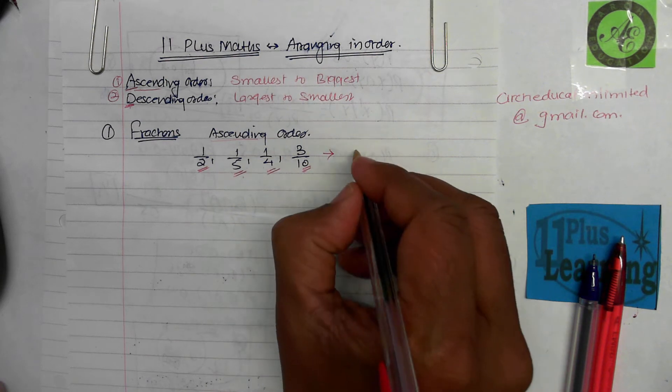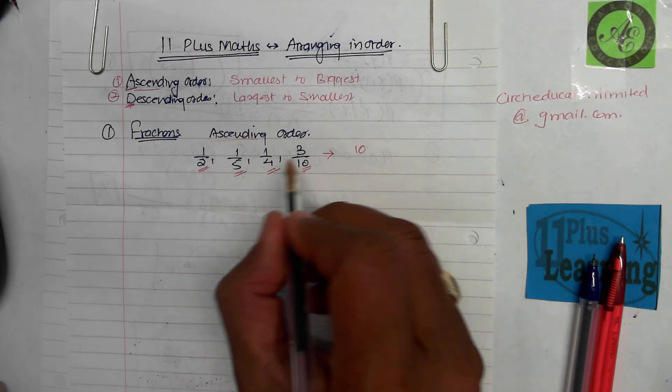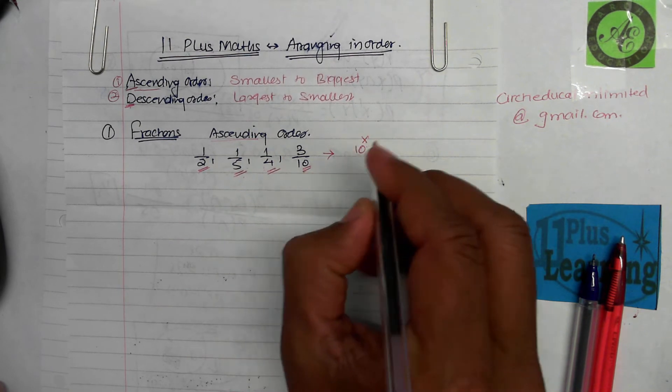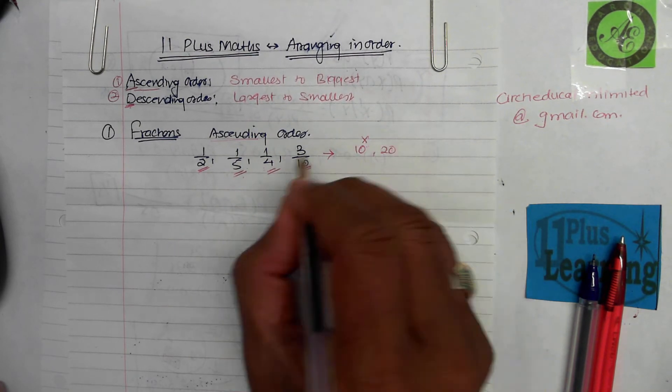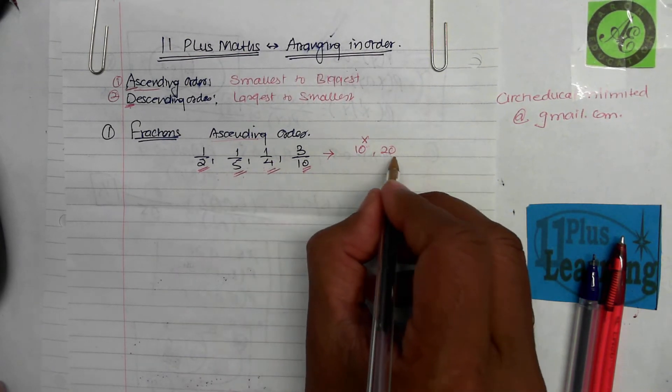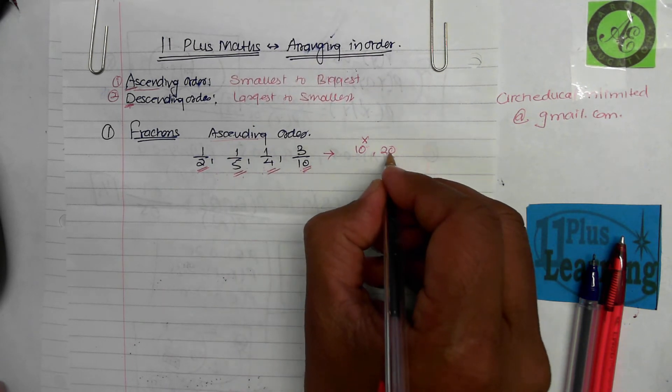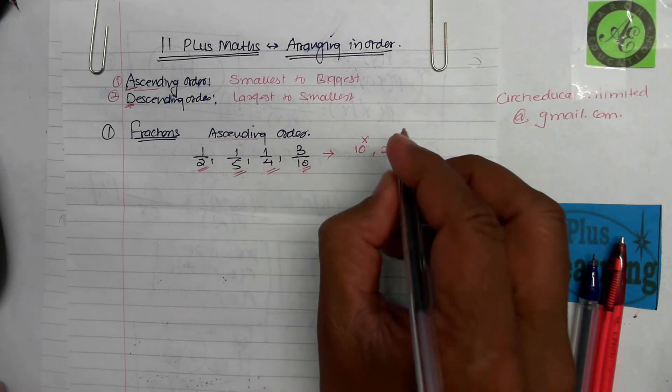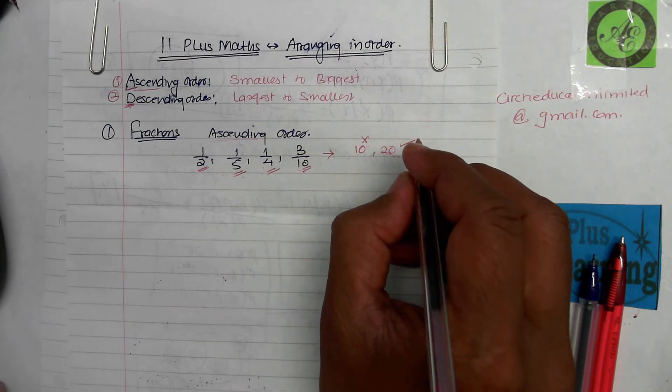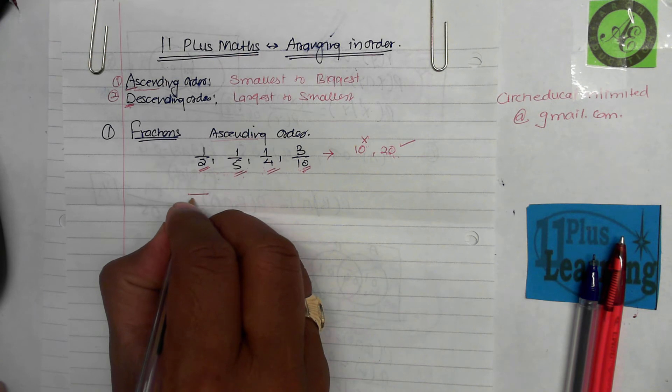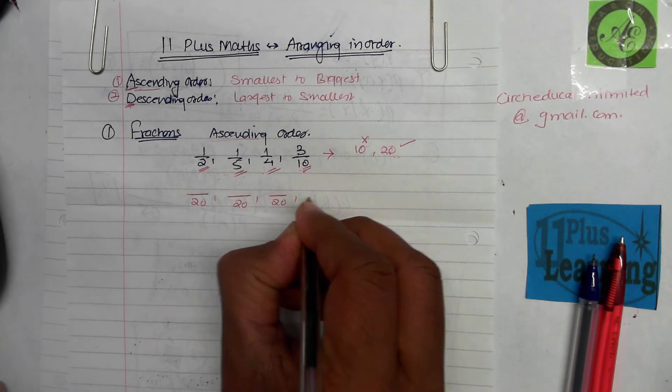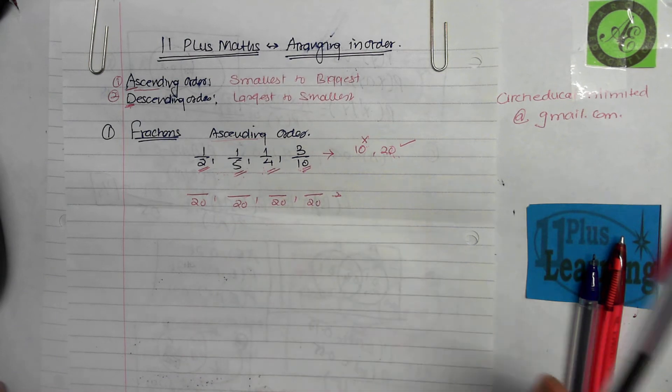In straightforward terms, look at the biggest of the numbers, find its times table. Ten: does two go into ten? Yes. Five into ten? Yes. Four goes into ten? No. Next number in ten times table is twenty. Does two go into twenty? Yes. Five into twenty? Yes. Four goes into twenty? Yes. Ten goes into twenty? Yes. So twenty is the number we're looking for.